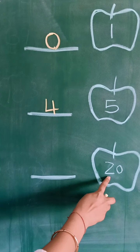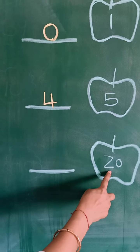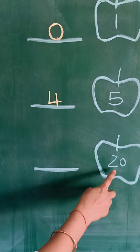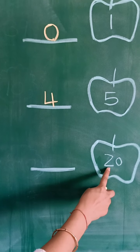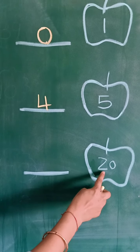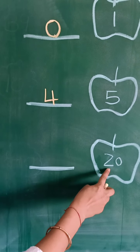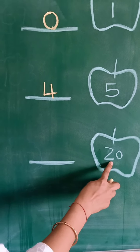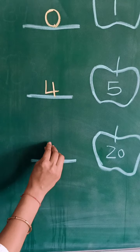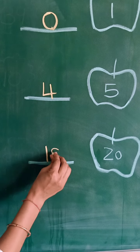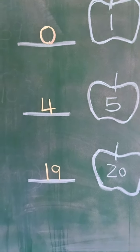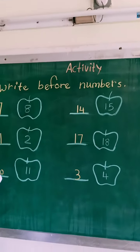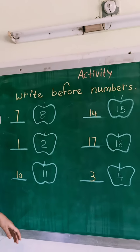Number 20. We speak 11 to 20 numbers: 11, 12, 13, 14, 15, 16, 17, 18, 19 and 20. Which number we speak before 20? Number 19. You understood how to find before numbers without the number line.